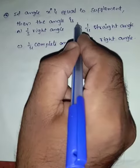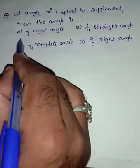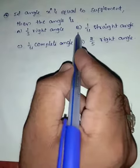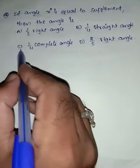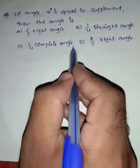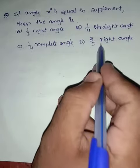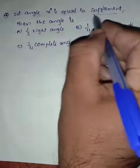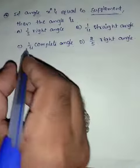If angle x degrees is equal to its supplement, then the angle is: option A - 1/3 right angle, option B - 1/4 straight angle, option C - 1/4 complete angle, option D - 2/5 right angle.